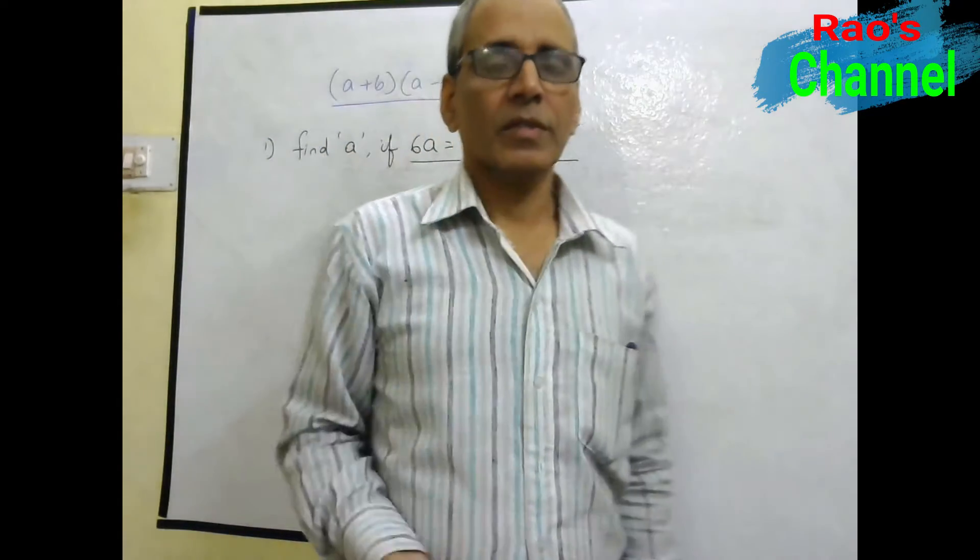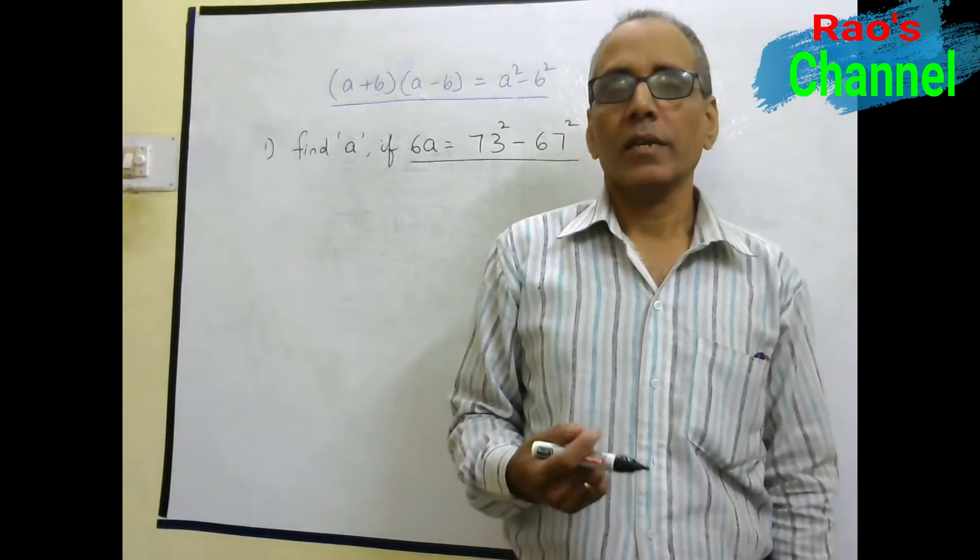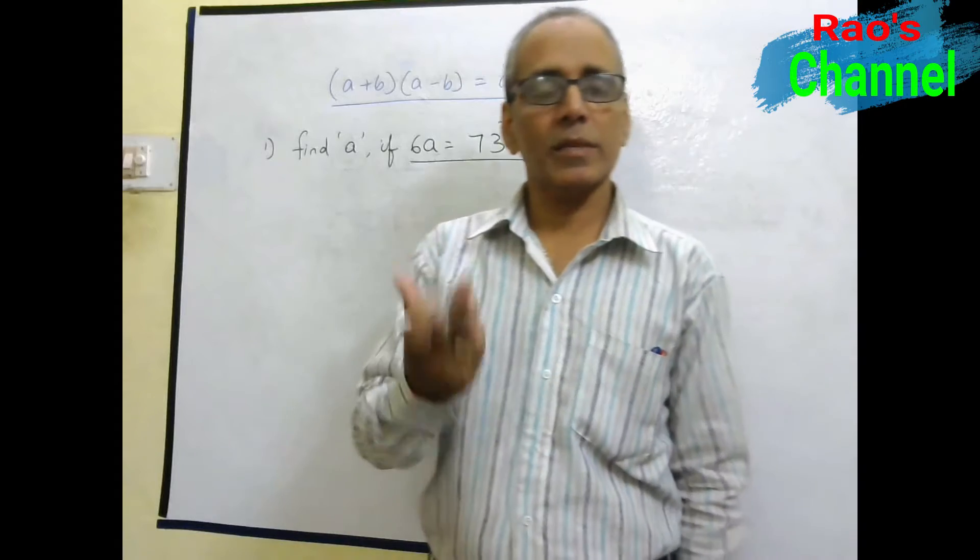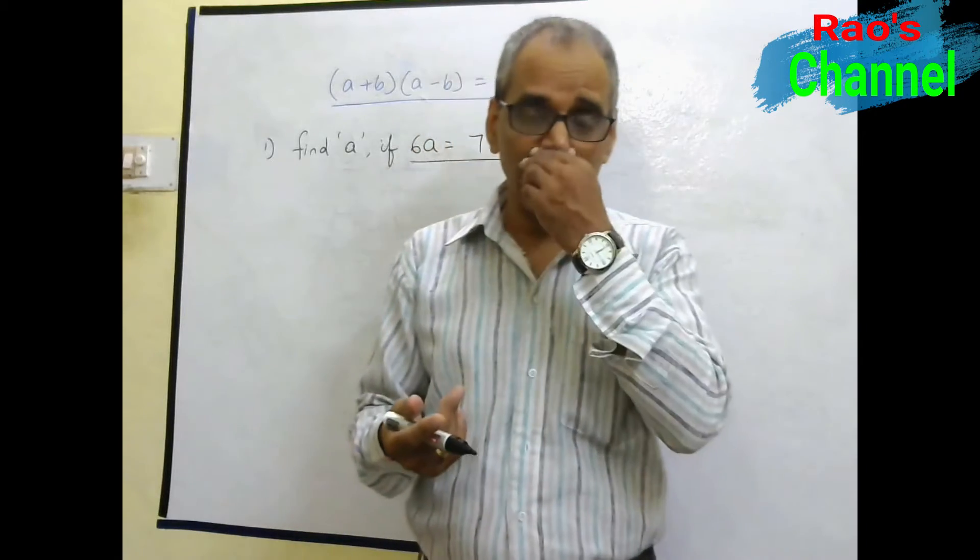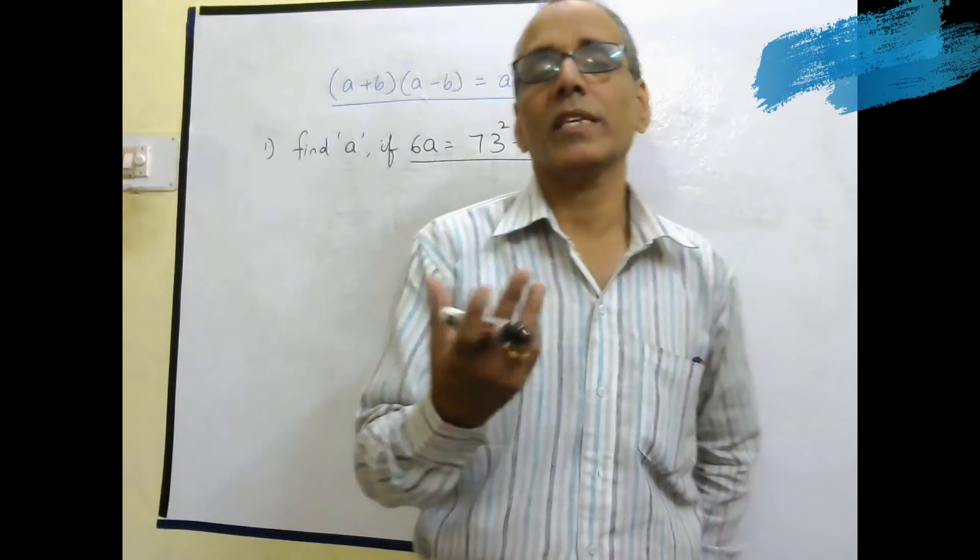Welcome to Ross channel. Today we learn some questions based on the identity A plus B of A minus B is equal to A square minus B square.